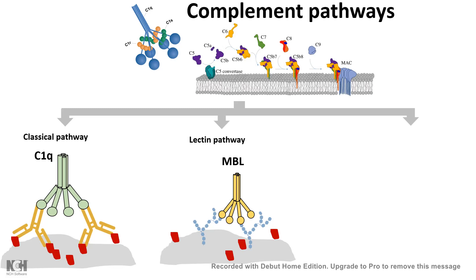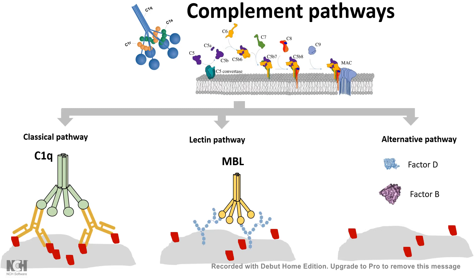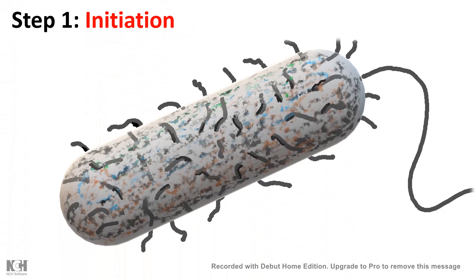Another pathway is the alternative pathway, which involves factor B and factor D, also converging like the other pathways in forming a membrane pore or opsonizing the bacteria. We will look at the classical pathway in this video. Be it the classical pathway or any other pathway, the steps of these complement-mediated responses are very similar.